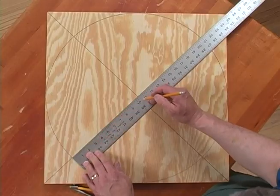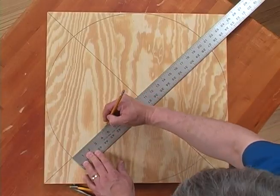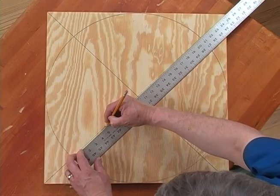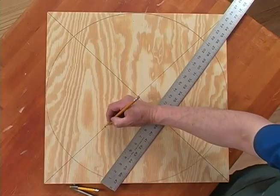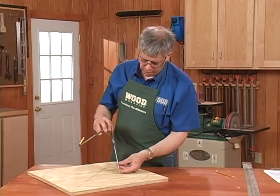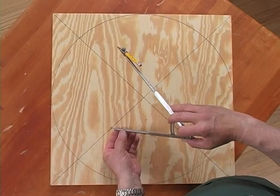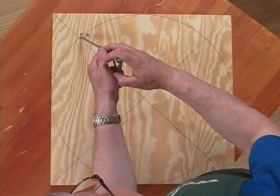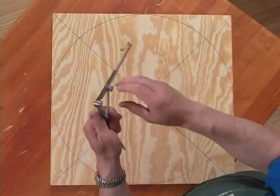Next reset your compass to the distance between this halfway point here and the outermost point of the circle here and lock it in position. Then draw a line on this side of the center point opposite your midway point here.